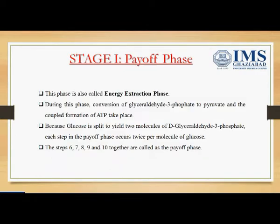The second stage of the glycolytic pathway is the Payoff phase, also known as the energy extraction phase. In this phase, energy will be produced. We ended the preparative phase with glyceraldehyde-3-phosphate, and from now glyceraldehyde-3-phosphate will get converted into pyruvate.